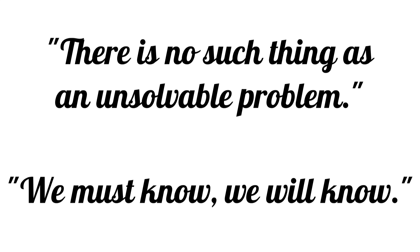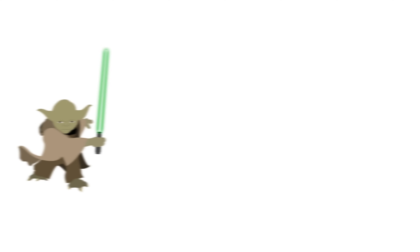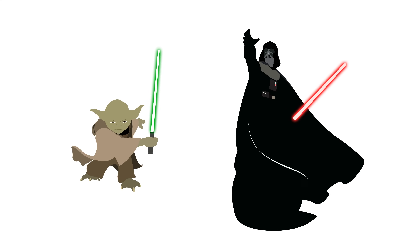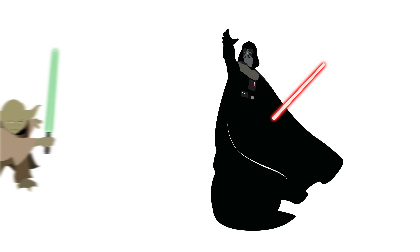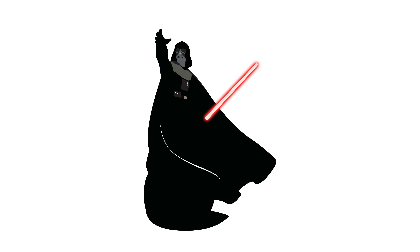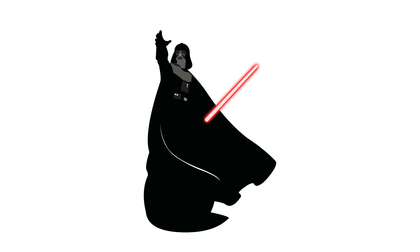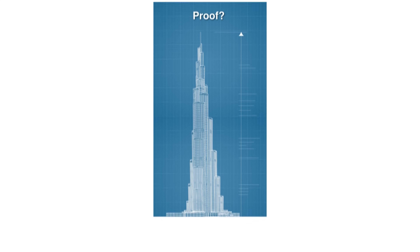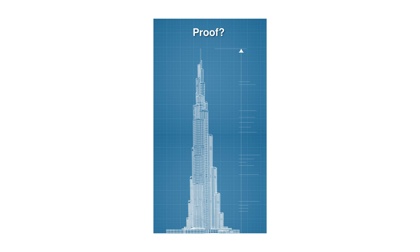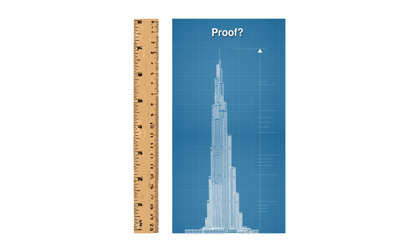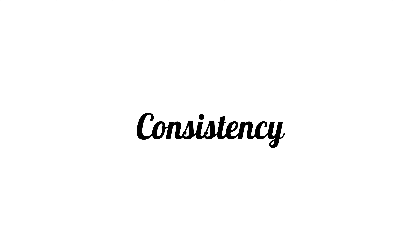One final property we might like is that if we can prove something, we shouldn't be able to prove the opposite of that thing. Being able to prove a statement and its opposite would mean that we would be able to prove false statements, since one must be true and the other false. If we could prove false statements, we would have to question all of our mathematical proofs, since they could lead us to an incorrect conclusion. If your ruler is inaccurate, any measurement made with that ruler would be untrustworthy. Proving at most one of a statement and its opposite is known as consistency, and seems like a no-brainer.